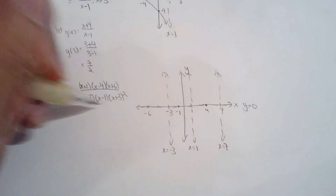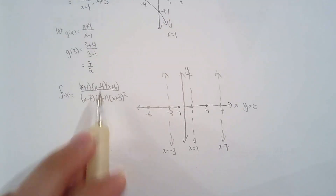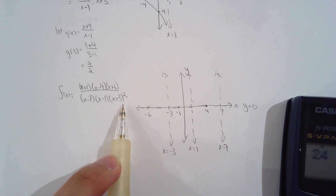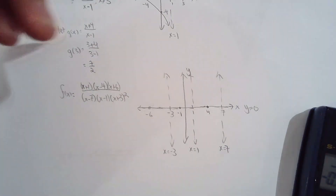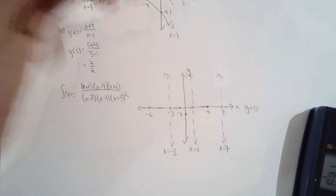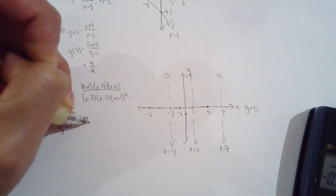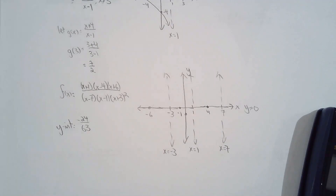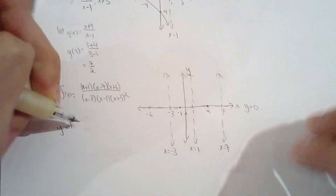There's one more thing I need to find: the y-intercept. To be honest, I don't really care about the exact value — I just need to know whether it's positive or negative. The numerator at x=0 gives negative 24, and the denominator gives 7 times 9 which is 63, so the y-intercept is negative 24 over 63. Simplifying, that's negative 8 over 21. It's negative, which is all I need to start plotting.